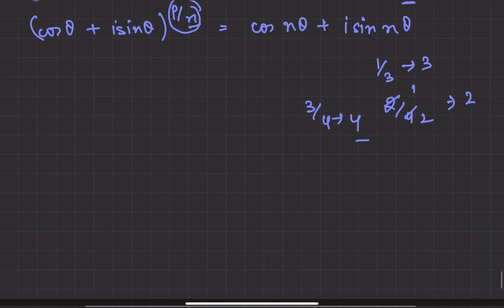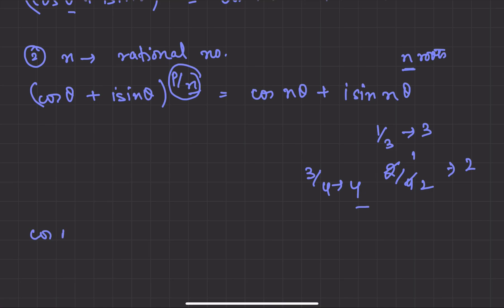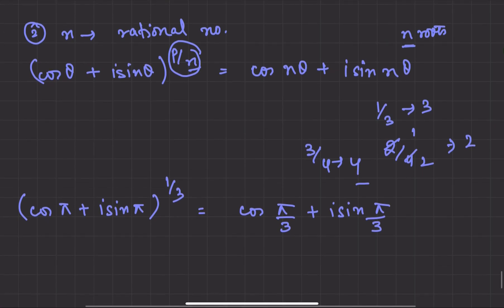Let's do some examples based on the second case. Let's take cos pi plus iota sin pi, and power we take 1 by 3. Now what will happen here? Here 3 roots exist and there will be 1 root: cos pi by 3 plus iota sin pi by 3. We have multiplied with 1 by 3. Now see, this is 1 root and 2 more roots exist.